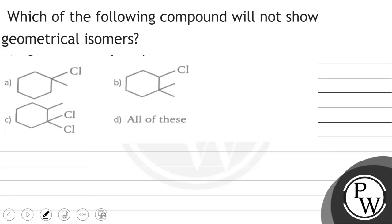I'll have a show. Let's hit the question. The question says which of the following compound will not show geometrical isomers.